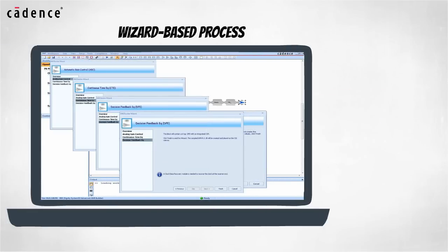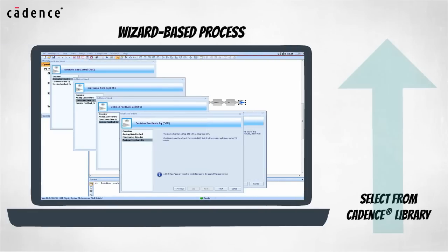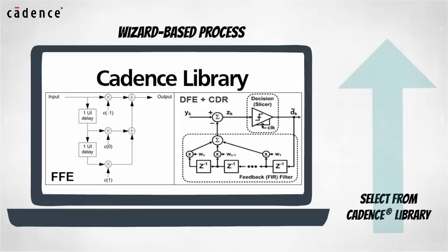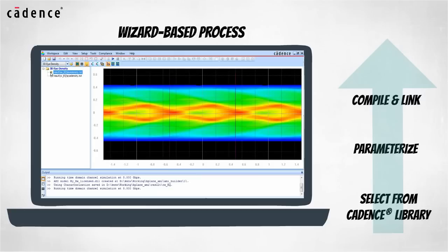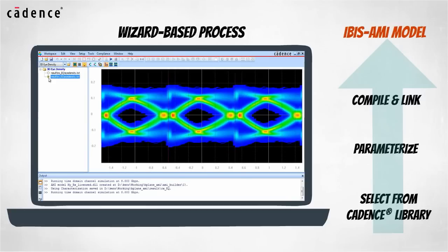The wizard-based process lets you select equalization algorithms from the Cadence Library of Equalization Routines, parameterize those algorithms, and compile and link them together, creating an IBIS AMI model that will behave just as you expect.